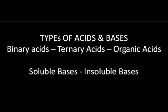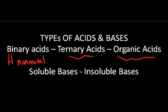The types of acids and bases are classified based on their chemical formula. There are binary acids, ternary acids, and organic acids. The binary acids are made of hydrogen and a non-metal, such as hydrochloric acid.